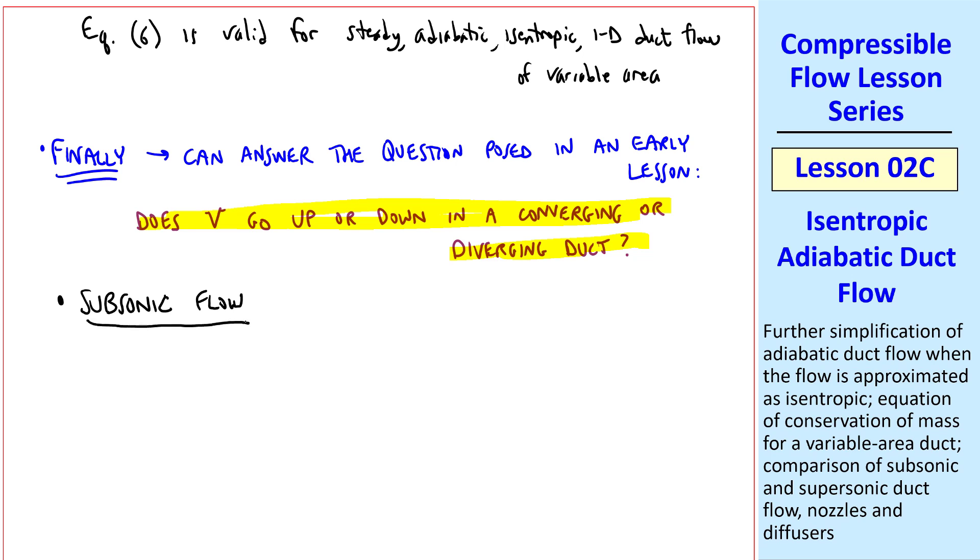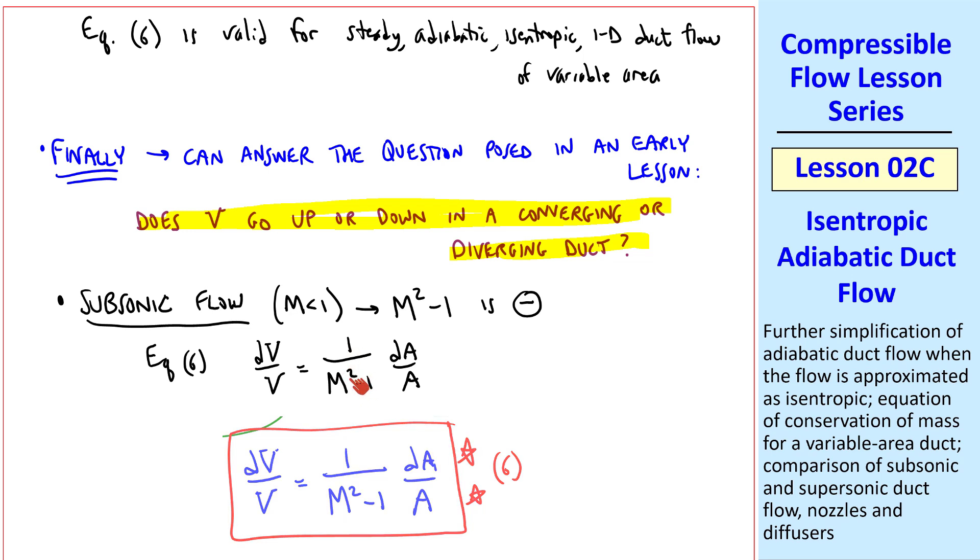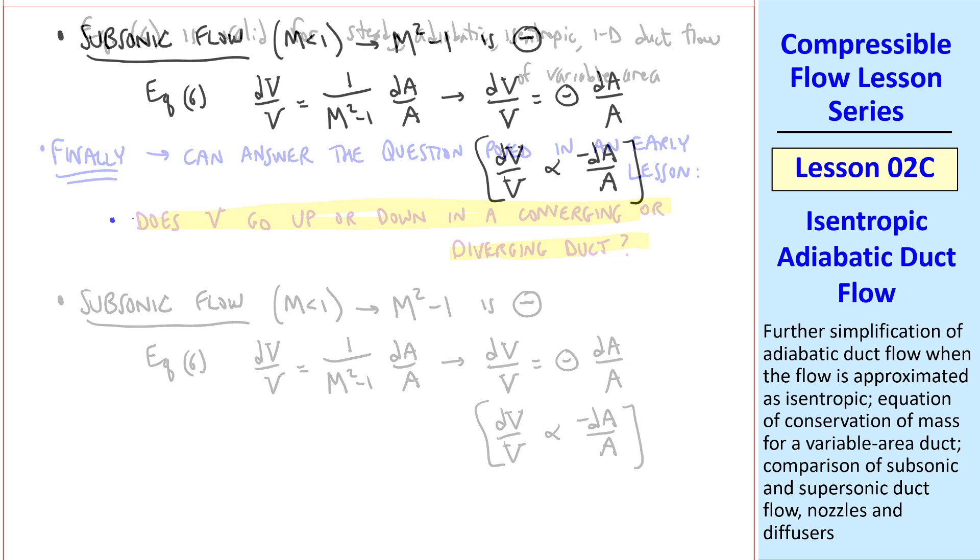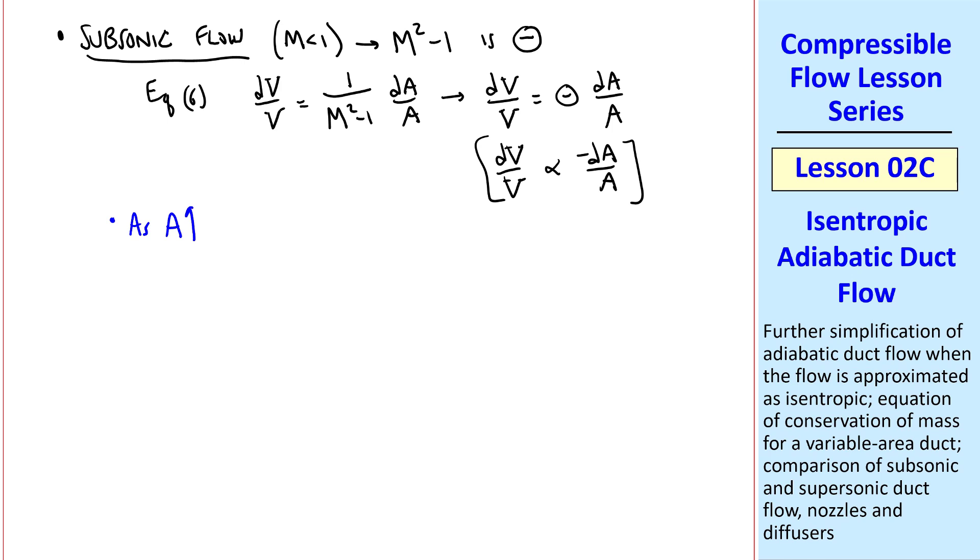Consider subsonic flow first, with Mach number less than 1. Well, then M squared minus 1 is negative, and so equation 6 has a negative number here. So dV over V is a negative number times dA over A, or you can think of it as dV over V is proportional to negative dA over A. This means that as A goes up, dA is positive.